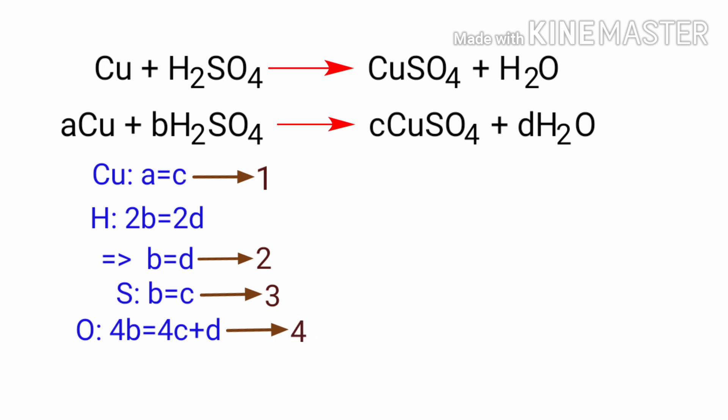Now we can solve the four simultaneous equations. It looks almost impossible, but we know the coefficients must be integers. Let's set c equals 1. Then from equation 1, a equals 1. From equation 3, b equals 1.